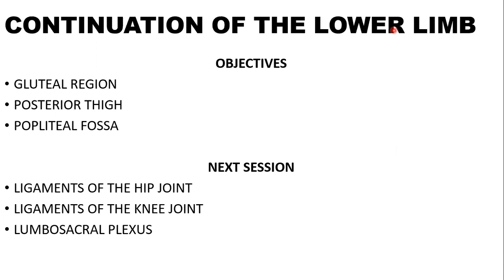This video is a continuation of the previous video where we started the lower limb. We looked at the pelvic region — the three bones that form the pelvic bone: the ilium, ischium, and pubis — along with the sacrum and coccyx to form the pelvic region. We also looked at the anterior thigh muscles. We looked at the iliopsoas muscle, which is made up of the iliacus and the psoas muscle, and the sartorius muscle, the longest muscle in the human body.